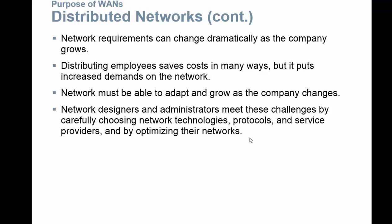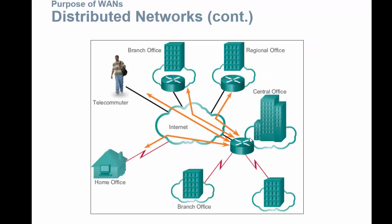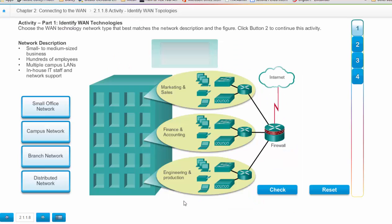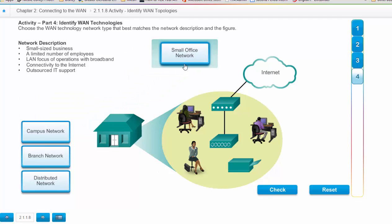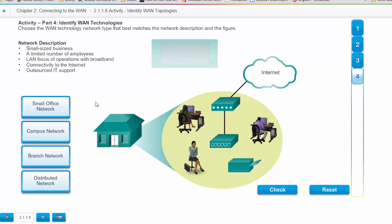You're the one who's going to be researching this information to see who to go with and optimizing their networks. We have teleworkers, home office users, and people all over the world working, so the network designer has got to keep all this in mind so that everyone can work efficiently and be productive. In your online ebook for this section, activity 2.1.8 is a great place to see if you understand each portion of what's going on here. It has parts one through four — you identify what it is, check it, and see if you're correct. You can always reset it, so I'd recommend going through it a couple of times to make sure you understand the different network descriptions.